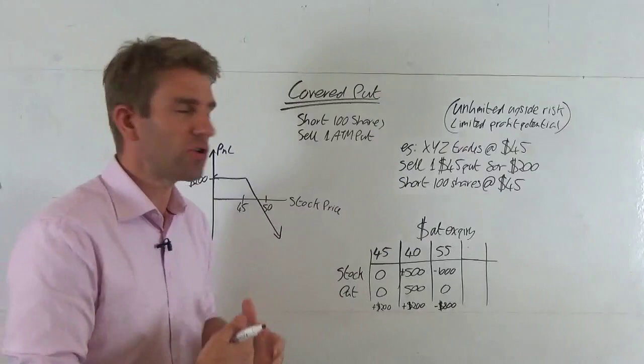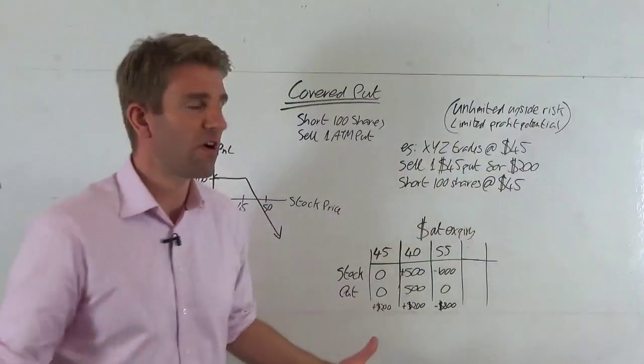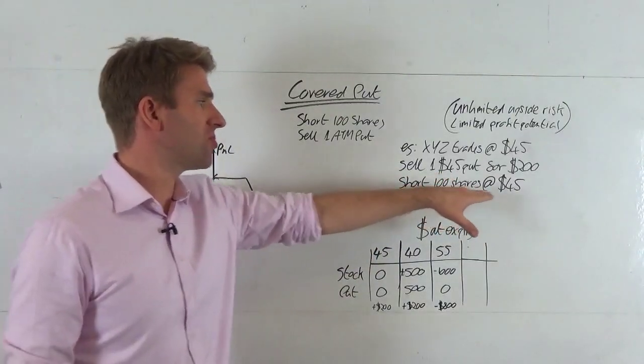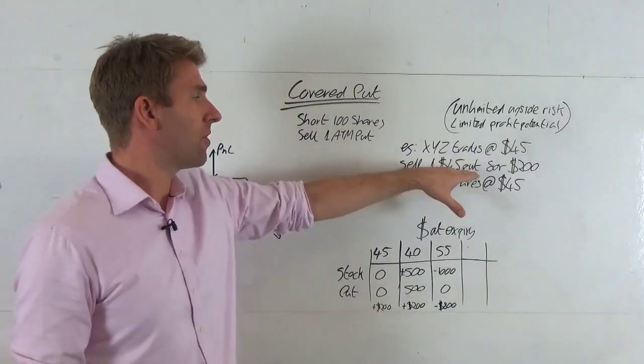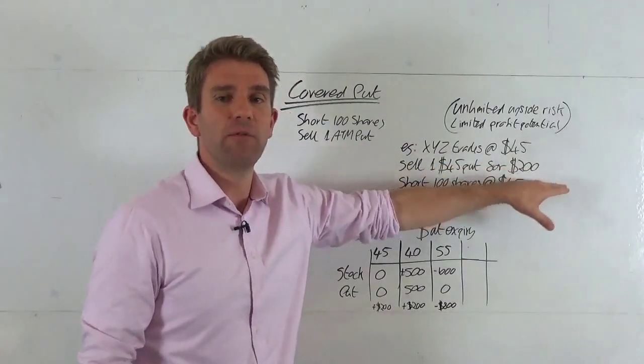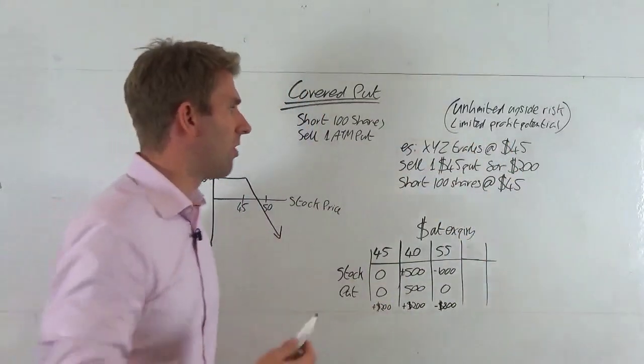Let's imagine XYZ trades currently $45. We sell short 100 shares at $45. We also sell one $45 put, which is at the money, and we get $200 credit for that. So the total is we receive $200 credit on this deal.